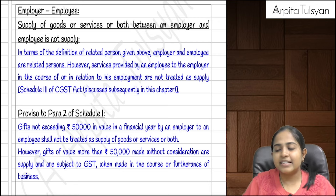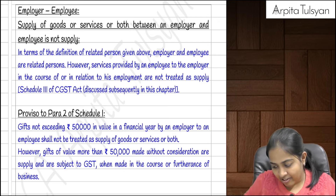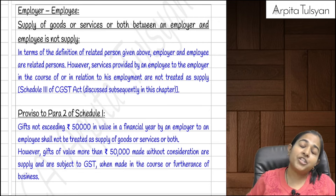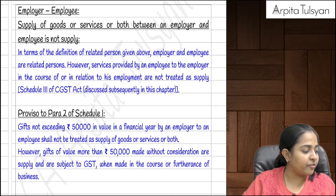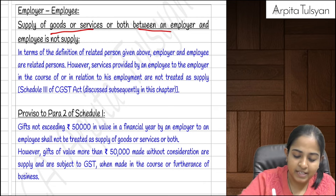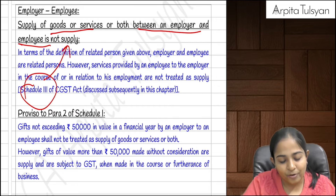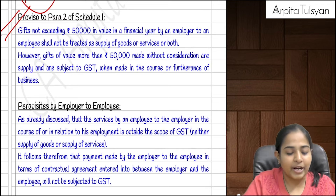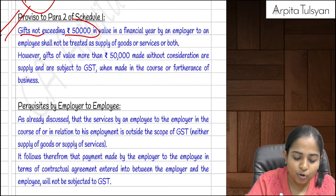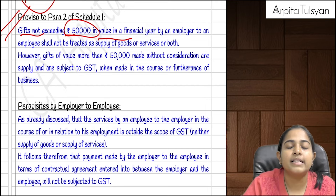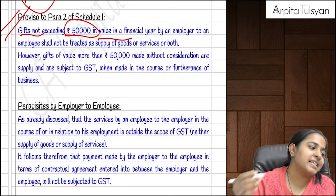Schedule 1 says any transaction between employer and employee is liable to GST, but Schedule 3 removes employer-employee transactions from the purview of supply. Exception: gifts given by employer to employee — if the value of gifts does not exceed ₹50,000 in a financial year, it is not considered a supply. Gifts are given for no consideration.